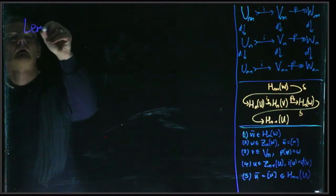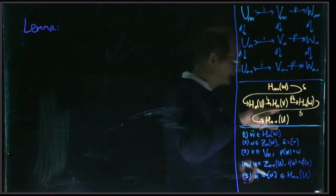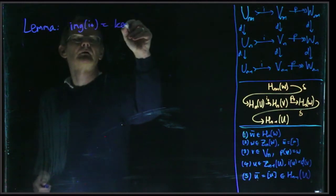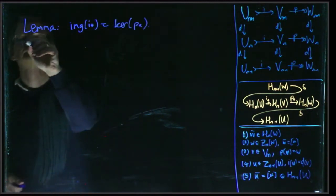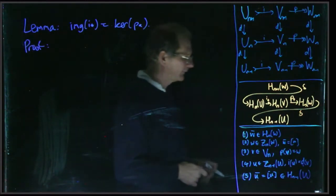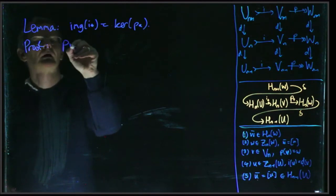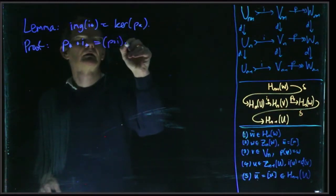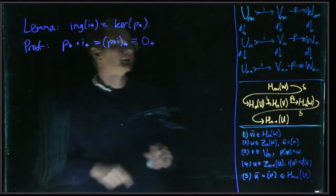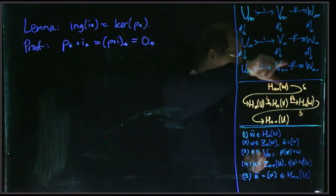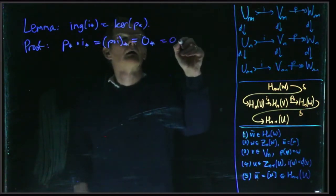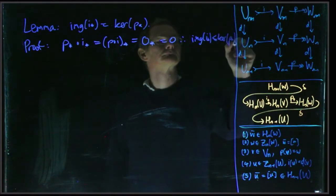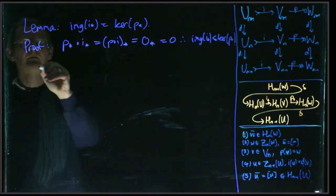One half of that is easy. If we do p_* composed with i_*, that composite is the same as the induced map of p composed with i. But these sequences have a short exact sequence in every row, so p composed with i is just zero. So this composite is zero, and that means that the image of i_* is contained in the kernel of p_*. That's contained one way around, but the real work is to do it the other way around.